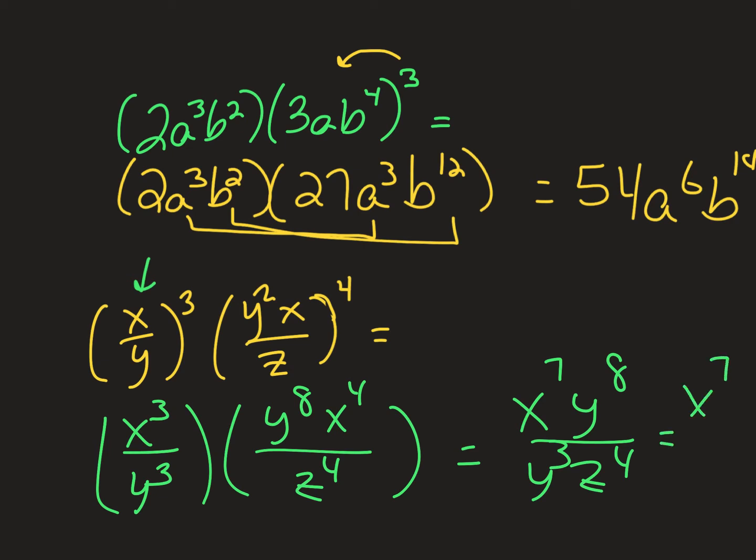So I'm going to divide here. Which means I'm subtracting exponents. Eight minus three is five. So I'm going to add the y to the fifth in my numerator. z to the fourth on the bottom. And the reason the y stayed in my numerator is because it's where the bigger y was. Your variable is always going to stay where your bigger exponent is. So make sure you get that down.